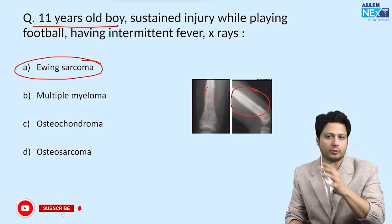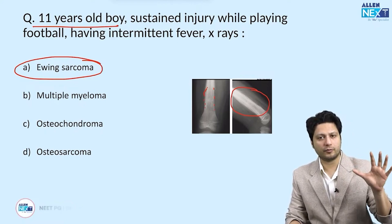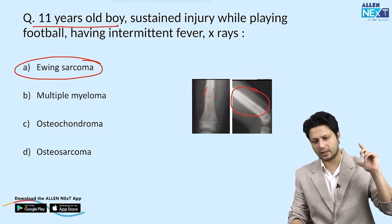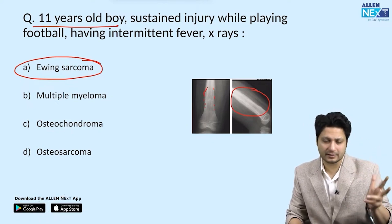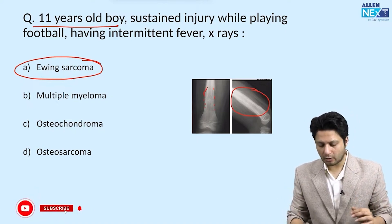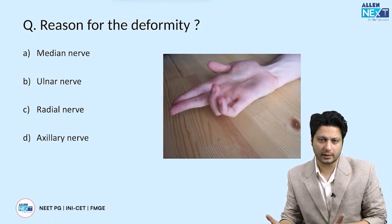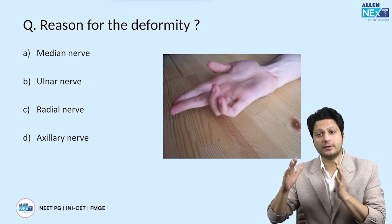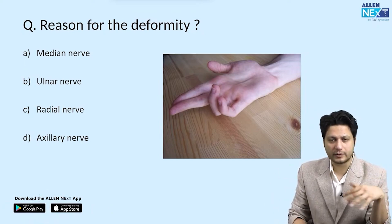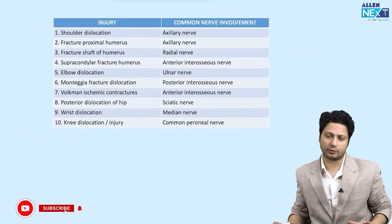So to recap: segment one was tuberculosis, segment two was brace/splint identification, segment three was cast identification, segment four was infections, segment five was tumors. The sixth — and most important — segment is nerve injury, something we have already covered in detail.